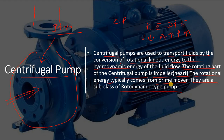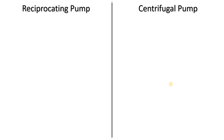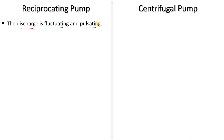Now let's discuss the differences between centrifugal pump and reciprocating pump one by one. In a reciprocating pump, the discharge is fluctuating and pulsating. But in the case of a centrifugal pump, the discharge is continuous and smooth.